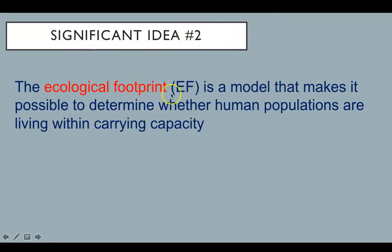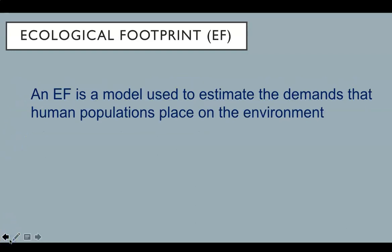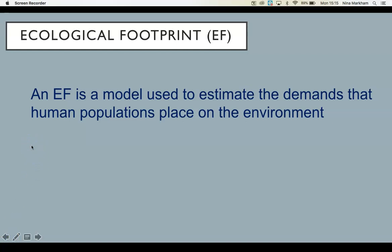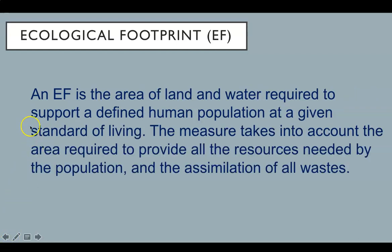Significant idea number two: the ecological footprint is a model that makes it possible to determine whether human populations are living within carrying capacity. An ecological footprint is the area of land and water required to support a defined human population at a given standard of living. The measure takes into account the area required to provide all the resources needed by the population and the assimilation of all wastes.